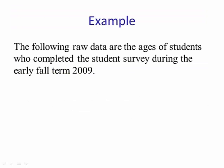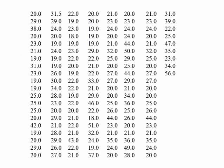Let's look at an example. The following raw data are the ages of students who completed the student survey during the early fall term 2009. Here's the raw data — there was a total of 149 students who took the survey. If we add up all these ages and divide by 149, that would be the average. Let's compute this using Minitab and StatCrunch.